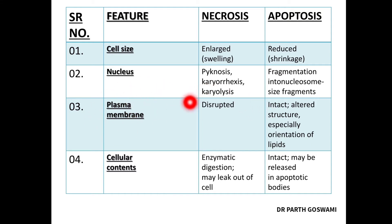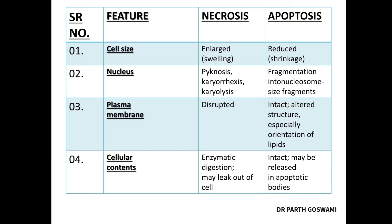The third important difference is the plasma membrane. In necrosis, you will have damage of the plasma membrane, while in apoptosis the cell membrane is totally intact but its structure is altered so that the cell undergoes apoptosis. Membrane is not damaged in apoptosis — that is a very important difference.